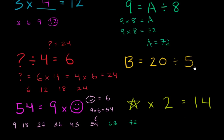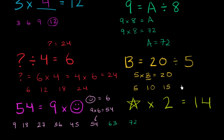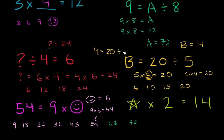B is equal to 20 divided by 5. Well, what's 20 divided by 5? There are a couple of ways you could think about it. You could view this as the same thing as saying that 5 times b is equal to 20. So 5 times what is equal to 20? 5 times 1 is 5, 5 times 2 is 10, 5 times 3 is 15, 5 times 4 is 20. So b must be equal to 4. We could write 4 is equal to 20 divided by 5, which is absolutely true.